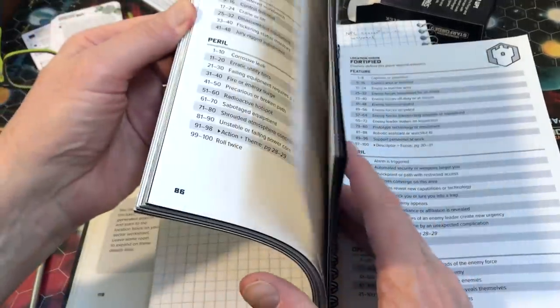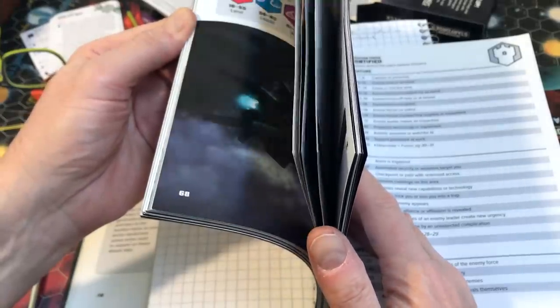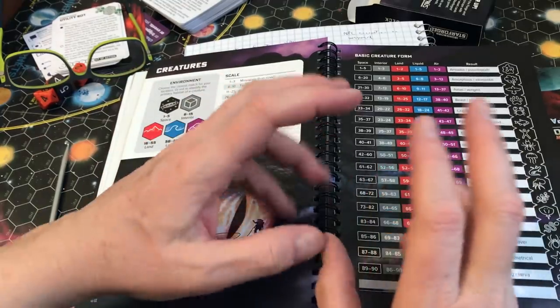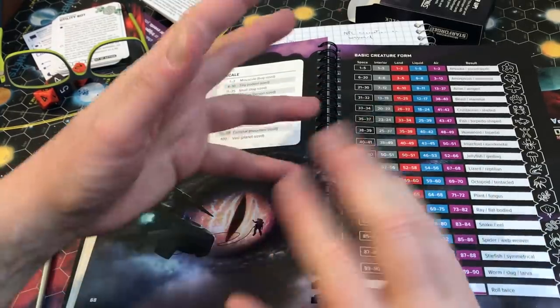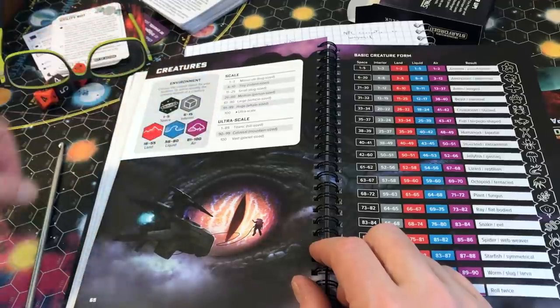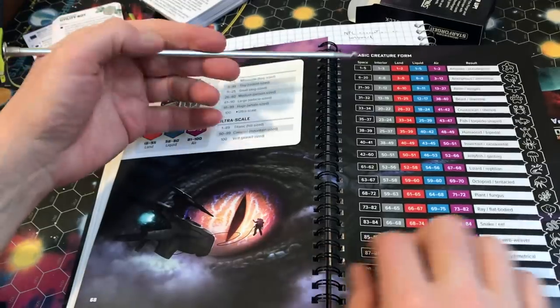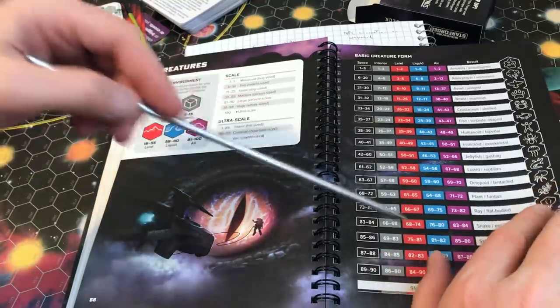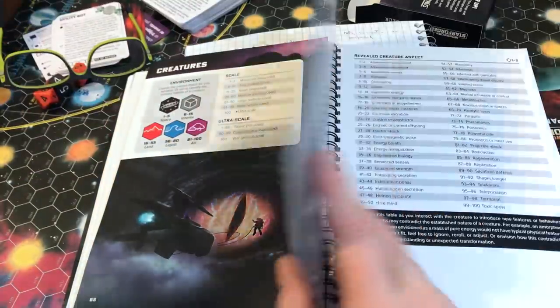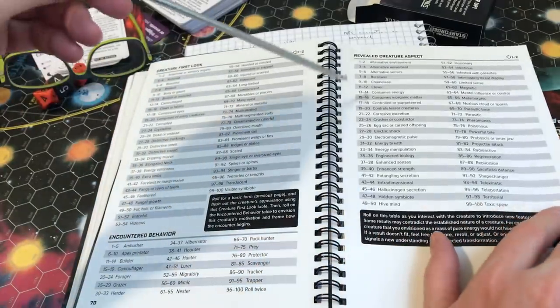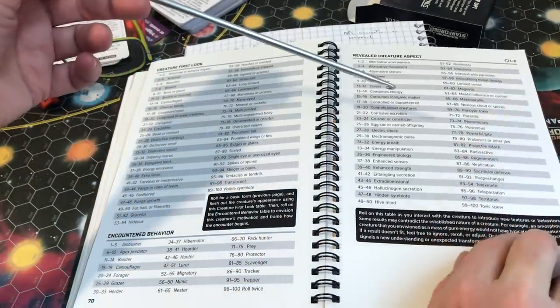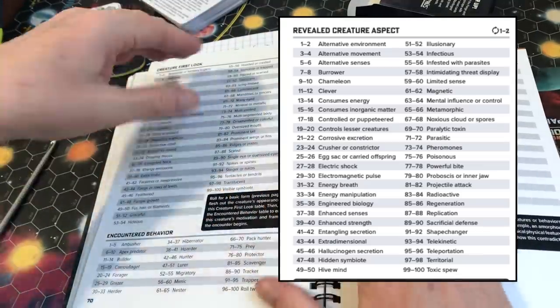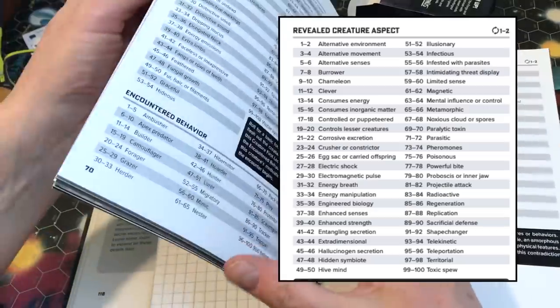For example, there is a chart here that I just showed earlier on about how to build creatures. If you want to create a creature that you will interact with, you have the choice of the size of the creature that it could be if you're finding it on an interior land, liquid or air and various aspects that it would have and what it looks like, what it reveals itself to be, what its behavior is. And from that, you will create something that makes sense to your story.